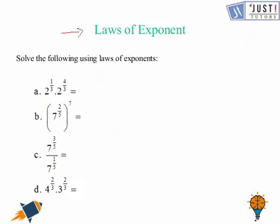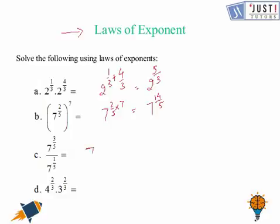Here are the questions for you. To try these questions you can pause the video. The answer for the first question is 2 raised to the power 1 over 3 plus 4 over 3, which equals 2 raised to the power 5 over 3. The next is 7 raised to the power 2 over 5 times 7, which is 7 raised to the power 14 over 5. The next gives 4 times 3, which is 12 raised to the power 2 thirds. These are the answers.